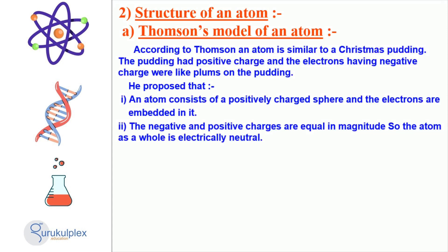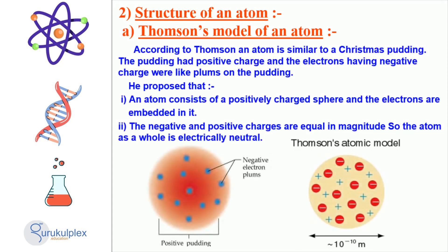J.J. Thomson proposed the plum pudding model of an atom in 1897. This model suggested that atoms were composed of a sphere of positive charge with electrons randomly embedded in it, which explained why an atom as a whole is electrically neutral due to the equal magnitudes of negative and positive charges. This was an exciting idea at the time and provided the basis for further discoveries about the structure of an atom.